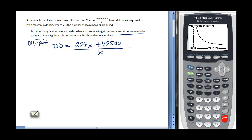To do that, I need to multiply X on both sides so I can get it out of my denominator. I'm going to have 750X equals, this will divide out, 254X plus 45,500. Now I subtract 254X from both sides. On my left side, I will get 496X.